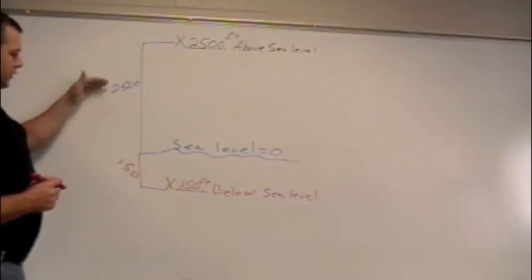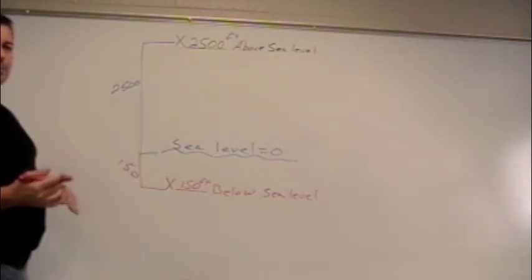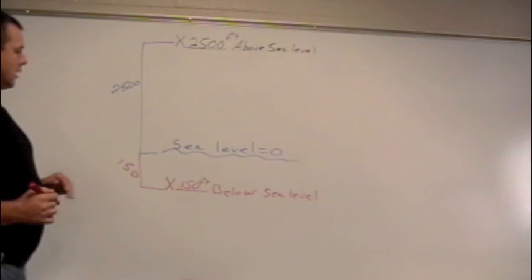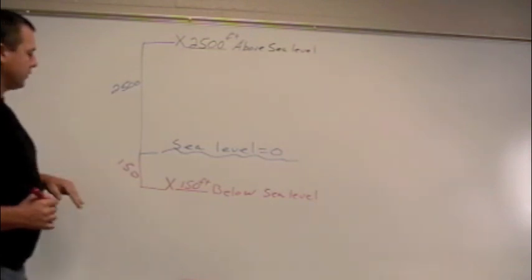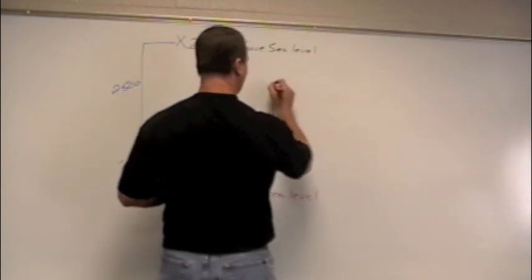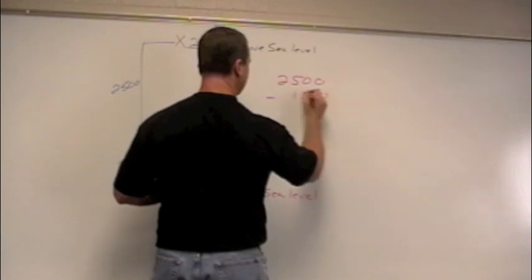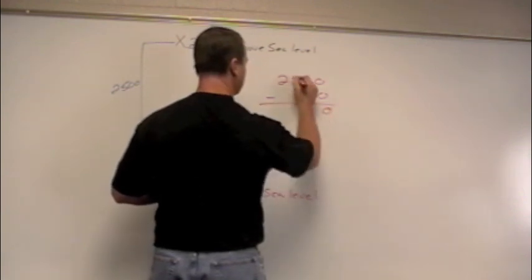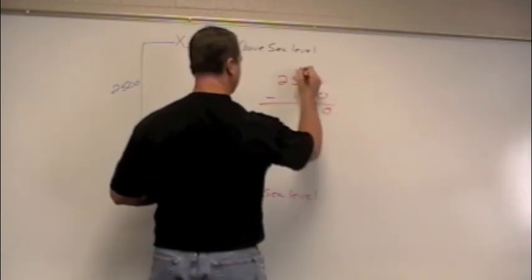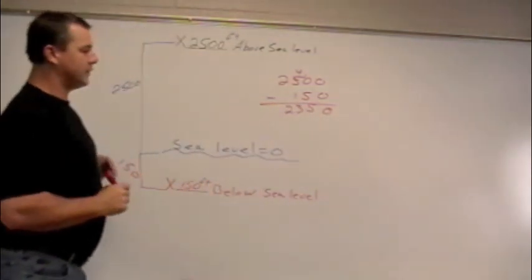So there's two options at this point to do with these numbers. We can add them or subtract them. So let's try both and see which one makes sense. So 2,500 minus 150. So if we went 2,500 minus 150, 0, 5, 3, and 2. It's 2,350 feet.